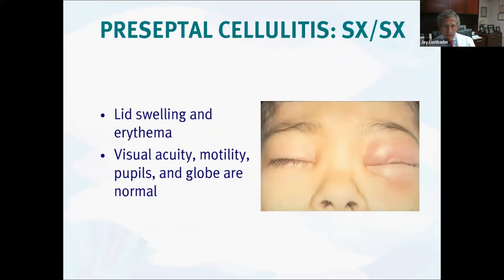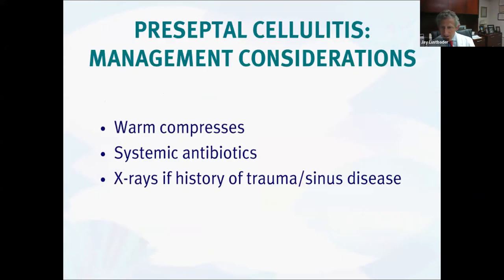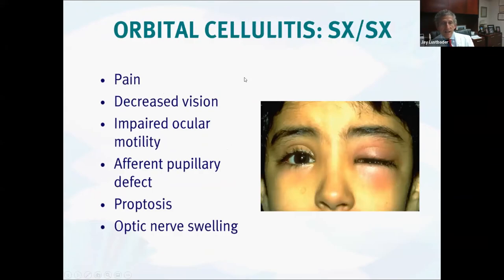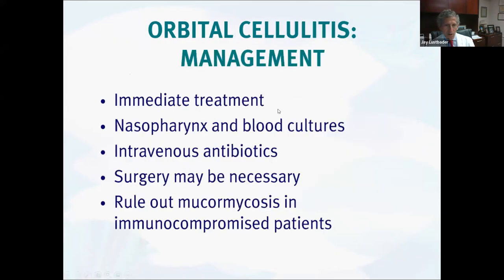Preseptal cellulitis: these patients have swelling and erythema of the lid, but the key thing to separate it from the more serious orbital cellulitis is that their acuity, ocular motility, and pupils are all normal. If that's the case, it's preseptal cellulitis and can be treated conservatively with warm compresses, systemic antibiotics like Keflex. Contrast that with orbital cellulitis — which externally can look the same — but these patients have pain, decreased vision, reduced extraocular motility, proptosis, and possible optic nerve swelling. This requires immediate treatment: IV antibiotics, nasopharyngeal and blood cultures, and possibly orbital surgery for decompression. Always think about mucor as well.